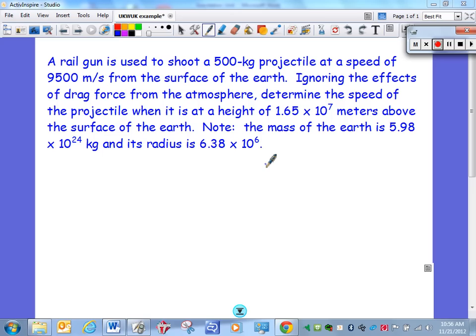We have a rail gun being used to shoot a 500 kilogram projectile at a speed of 9500 meters per second from the surface of the Earth. We're going to ignore the effects of drag force from the atmosphere and determine the speed of the projectile when it's at a height of 1.65 times 10 to the 7th meters above the surface of the Earth.